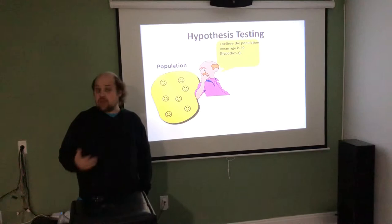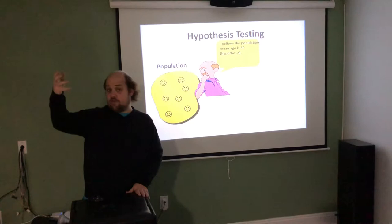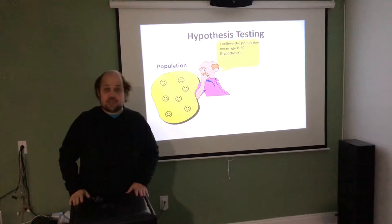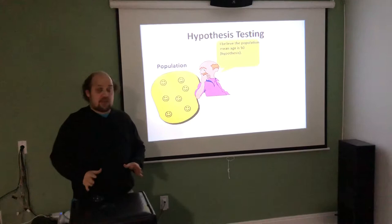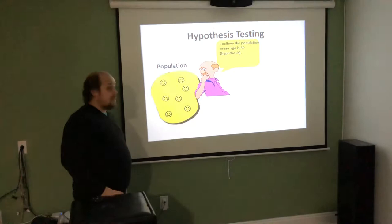In statistics it's a little different. The only way that we can prove something is by disproving our hypothesis. So when we set up something that we want to prove, we put what we want to disprove as what we're assuming to begin with. Then we collect statistical evidence which shows that what we were trying to disprove must be false.